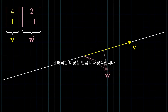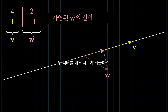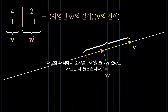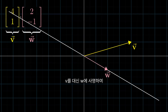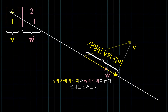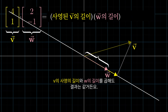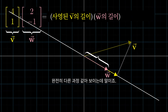Now this interpretation is weirdly asymmetric — it treats the two vectors very differently. So when I first learned this, I was surprised that order doesn't matter. You could instead project v onto w, multiply the length of the projected v by the length of w, and get the same result. I mean, doesn't that feel like a really different process?